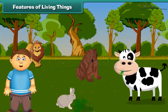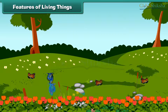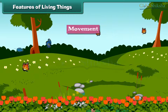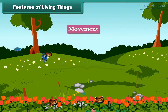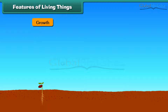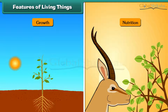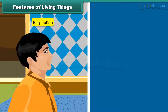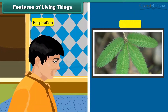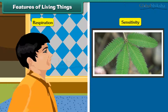Do you know how we can identify living things? All living things show movement — they frequently move from one place to another. All living things also show growth in their body, and they eat food for their growth and energy. Along with these features, they also breathe.